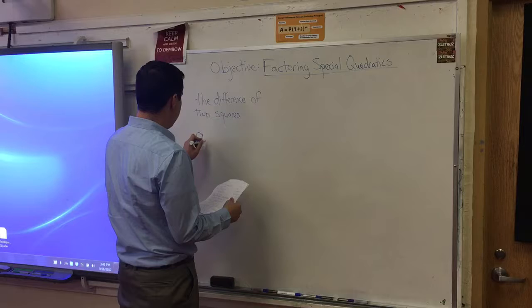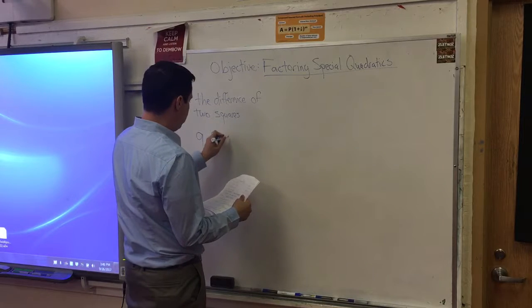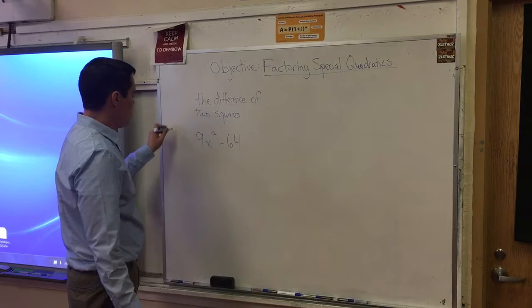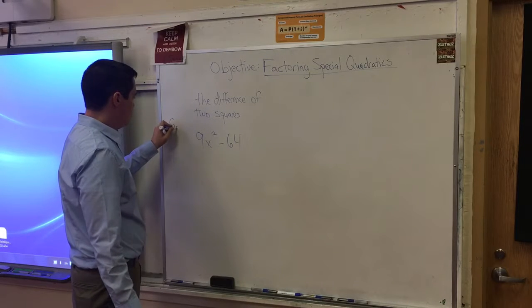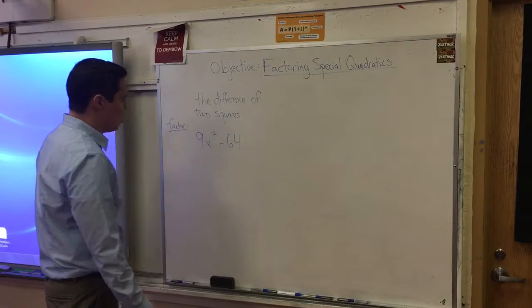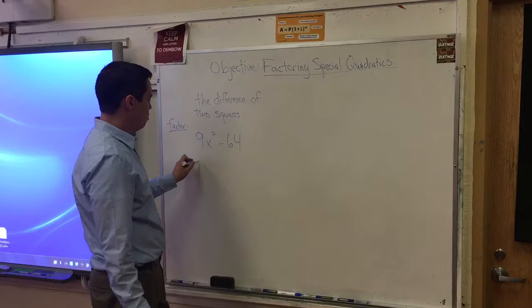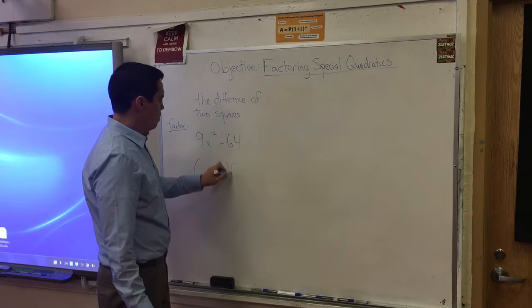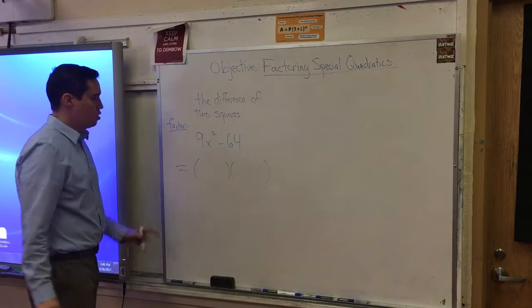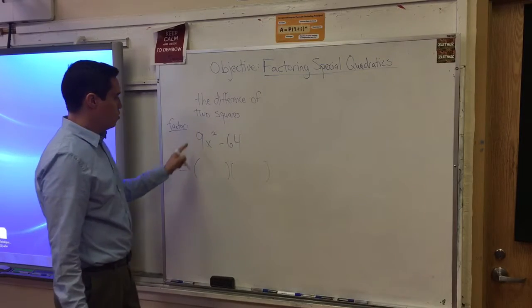So you have 9x squared minus 64, and we say to factor this. How do you factor this? When you think about factor, you're thinking about multiplying, multiples. So what can we put inside the parentheses that will factor to this?